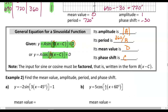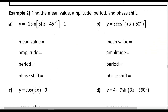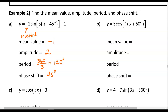In example 2A, the mean value is the vertical shift — the number added outside the function. The amplitude is the number multiplying sine or cosine, disregarding the negative sign since amplitude is always positive. The period is 360 divided by B, the number multiplying x, giving 120 degrees. The phase shift is the number subtracted from x, which is 45 degrees.